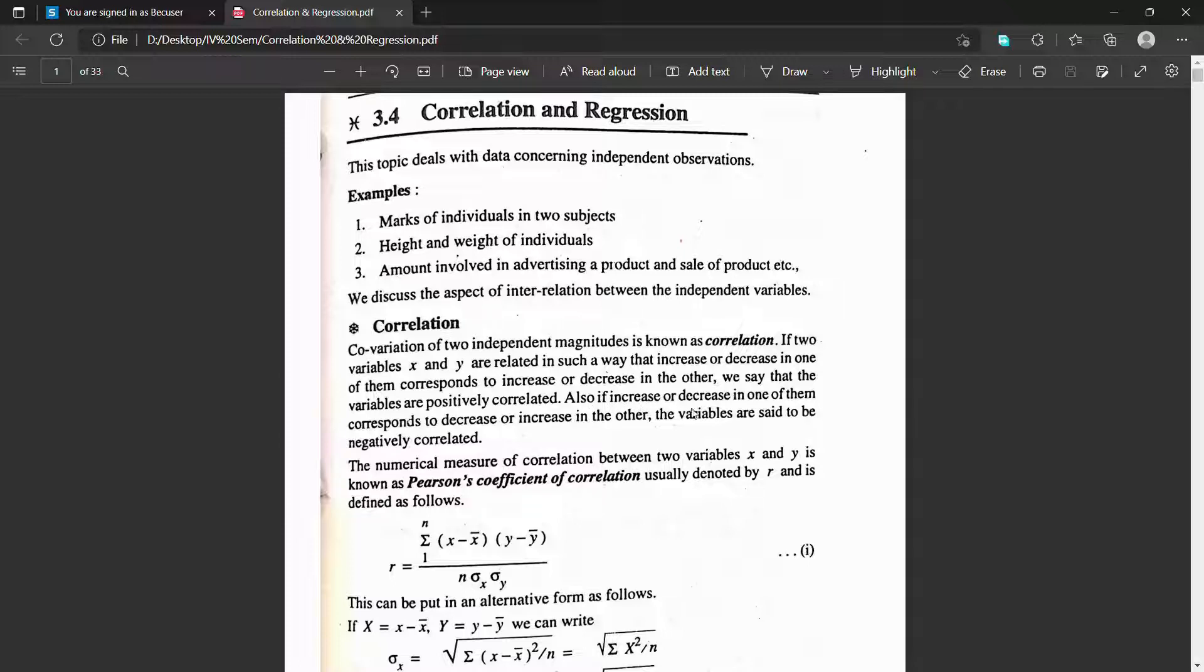If increase or decrease in one of them corresponds to decrease or increase in the other, the variables are said to be negatively correlated.